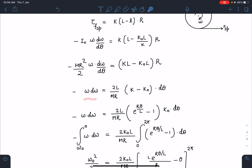Just take that L outside and rearrange the variables. I'm going to get ω dω on one side with of course a negative sign, and here I can take a few things common: 2L/MR, (k - k₀)dθ.